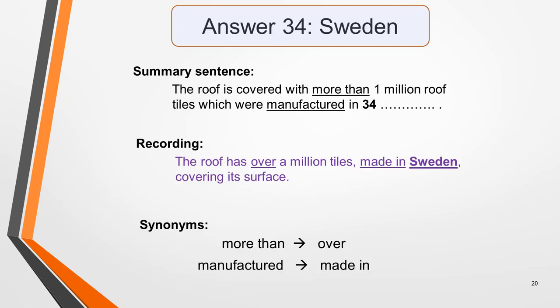Answer 34 is Sweden and here's the summary sentence. The roof is covered with more than one million roof tiles, which were manufactured in... And the recording: The roof has over a million tiles made in Sweden, covering its surface. And these synonyms have been used. More than for over and manufactured for made in. Sweden is a proper noun, so must start with a capital letter. If you're concerned that you'll forget to use capital letters when necessary, write all your answers for the listening test totally in capitals.